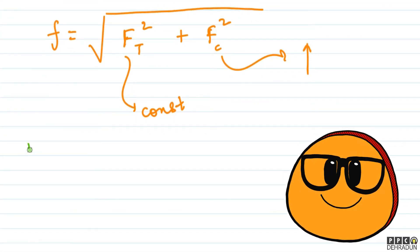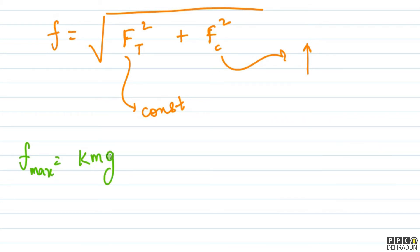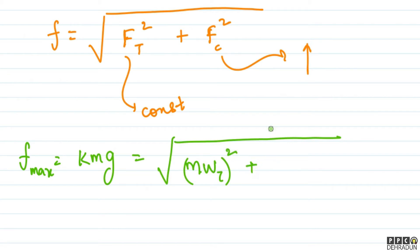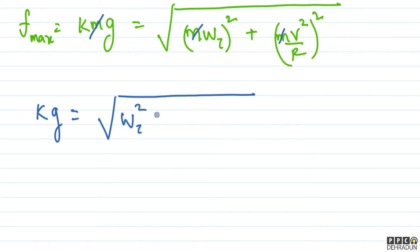तो हम लोग यहाँ पर कह सकते हैं कि friction की जो maximum value है वो k×mg हो सकती है, क्योंकि normal reaction mg है और friction coefficient k दे रखा है। तो यह होगा: k×mg = √(F_t² + F_c²) = √((m·w_τ)² + (m·v²/R)²)। इस expression में m cancel out हो जाता है, तो finally: k×g = √(w_τ² + v⁴/R²)।